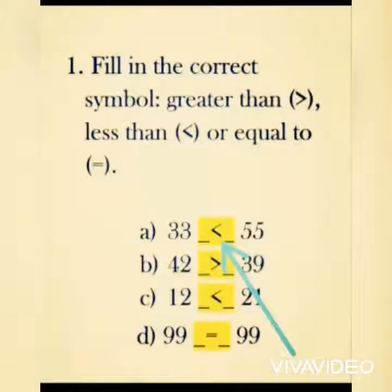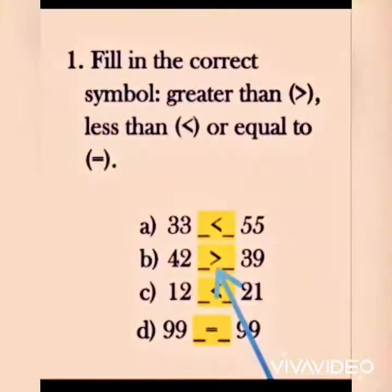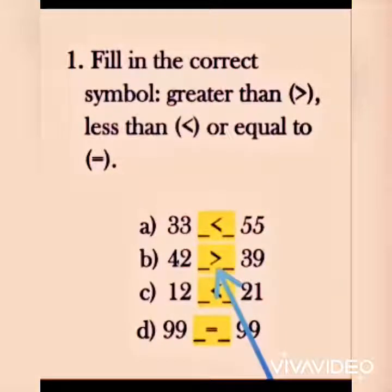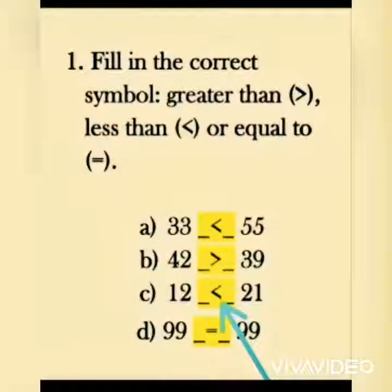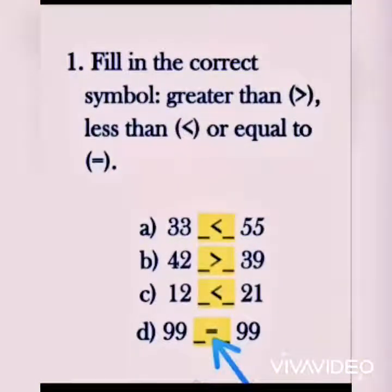Let's solve. Question A: 33 and 55 — 33 is less than 55, so we will use the less than symbol, left hand concept. Question B: 42 and 39 — 42 is greater than 39, so we will use the greater than symbol, right hand concept. 42 is greater than 39. Question C: 12 and 21 — 12 is less than 21, so we will use the less than symbol, left hand concept. Question D: 99 and 99 — both numbers are same, so we will use the equal to symbol. 99 is equal to 99.